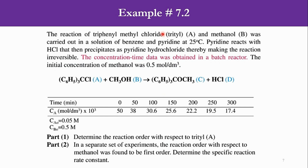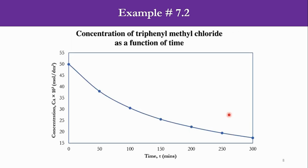Going to the numerical example: we previously solved a numerical using the integral method with time versus concentration data for a triphenylmethyl fluoride, trityl and methanol system. Methanol is in excess. Concentration data is given from 0 to 300 minutes with a time interval of 50 minutes, with values 50, 38, 30.6, 25.6, 22.2, 19.5, 17.4 (×10⁻³). The plot shows that as time progresses, the concentration of A decreases in the system.